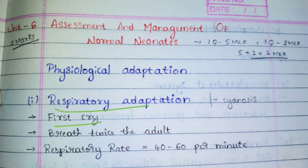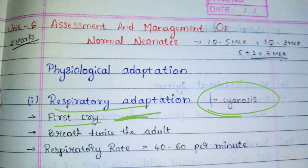For the respiratory system to start, the first cry is very important — the baby should cry as loudly as possible so that the lungs start to work. If the baby is not able to cry properly, there is a problem. Any problem in the respiratory system will be indicated in the form of cyanosis, that is bluish discoloration of the extremities. At birth the respiratory rate will be elevated and gradually normalize to around 40 to 60 breaths per minute.